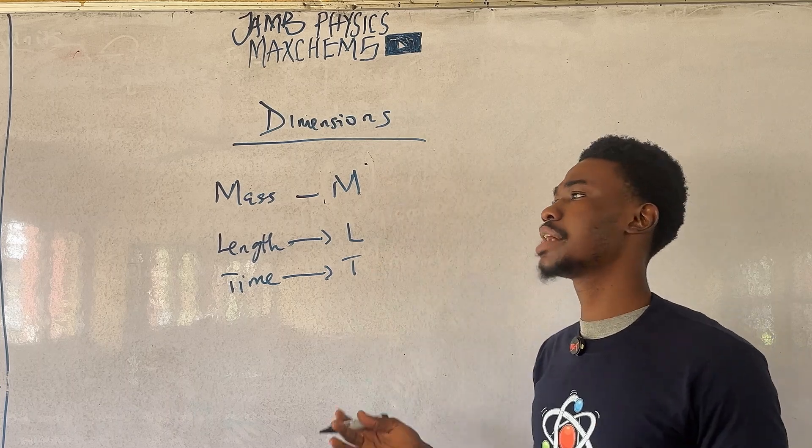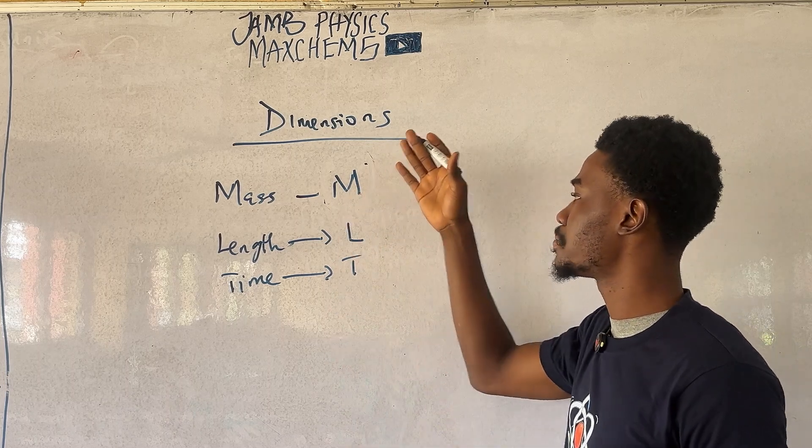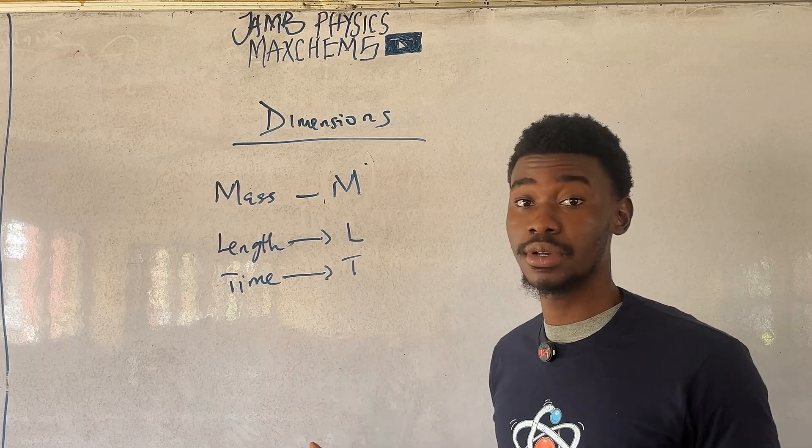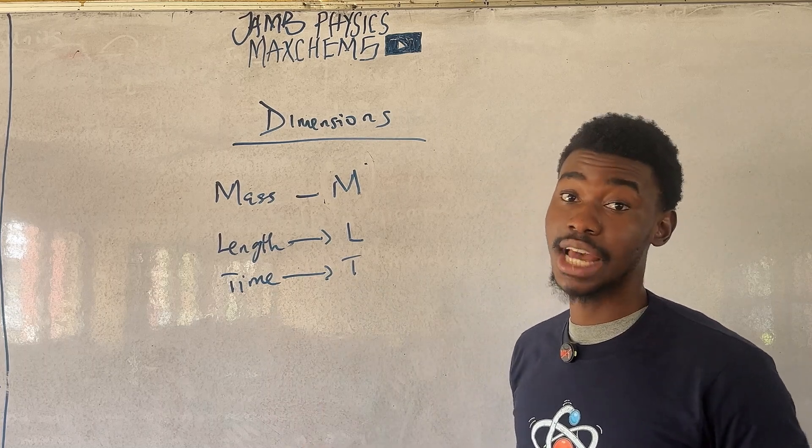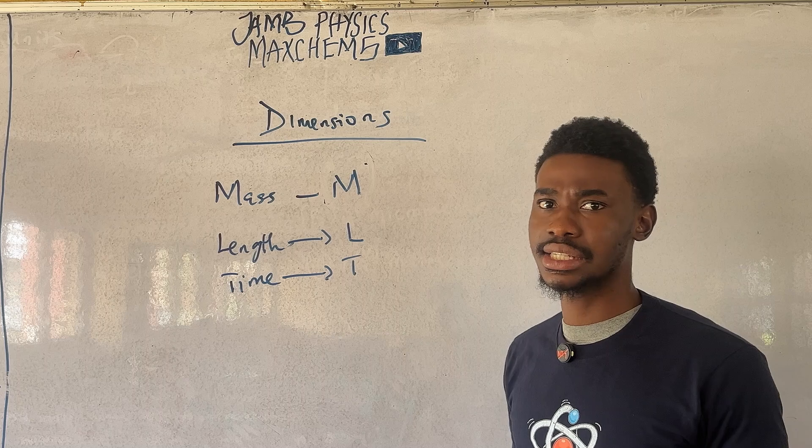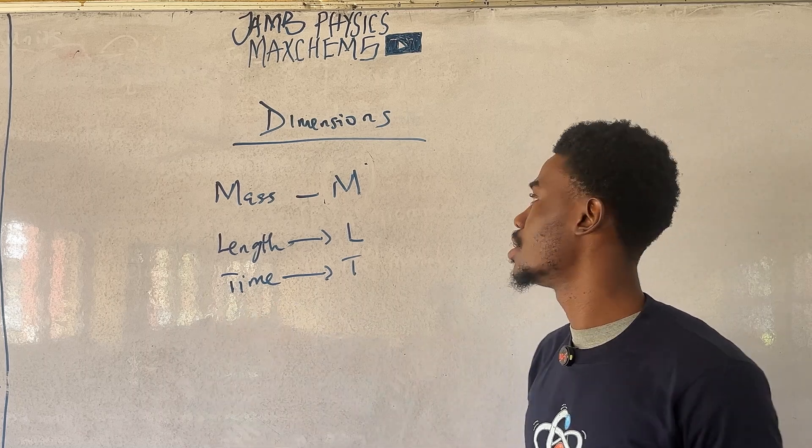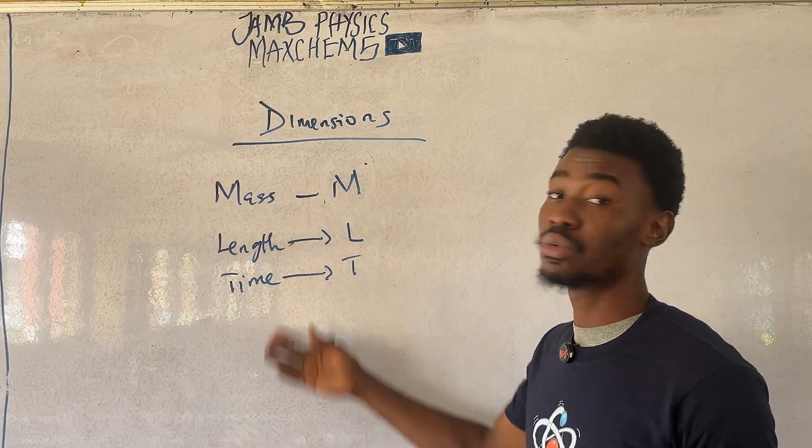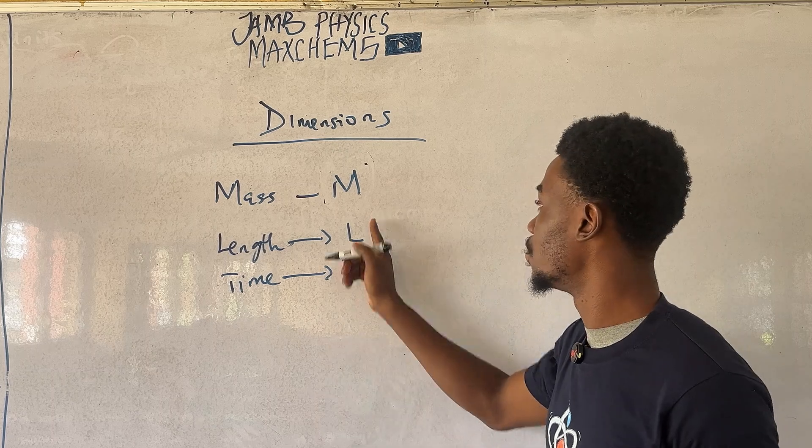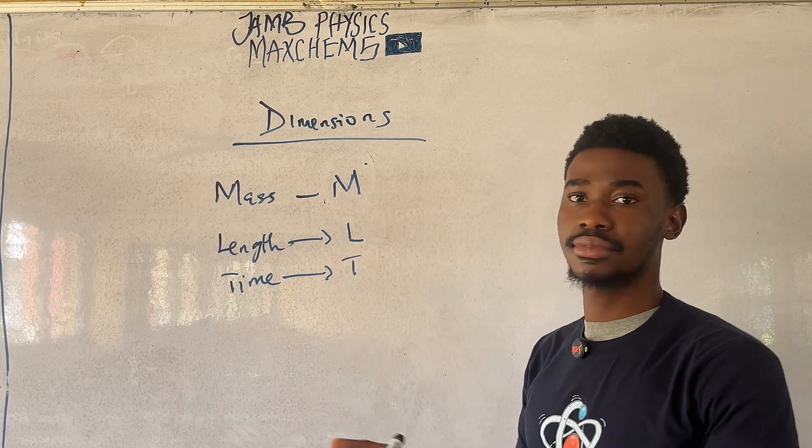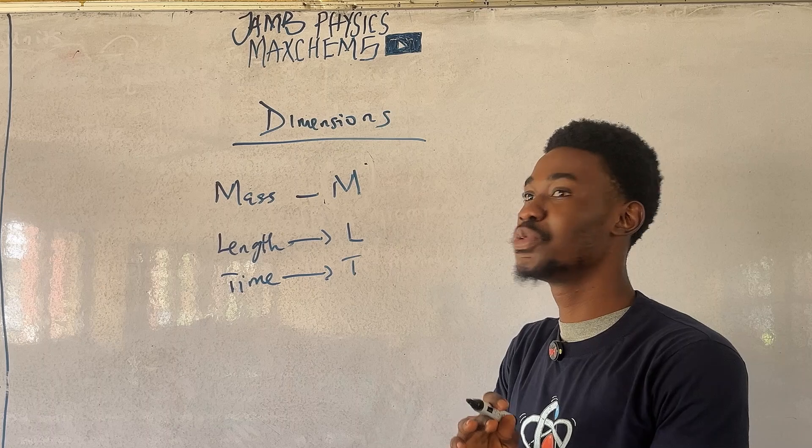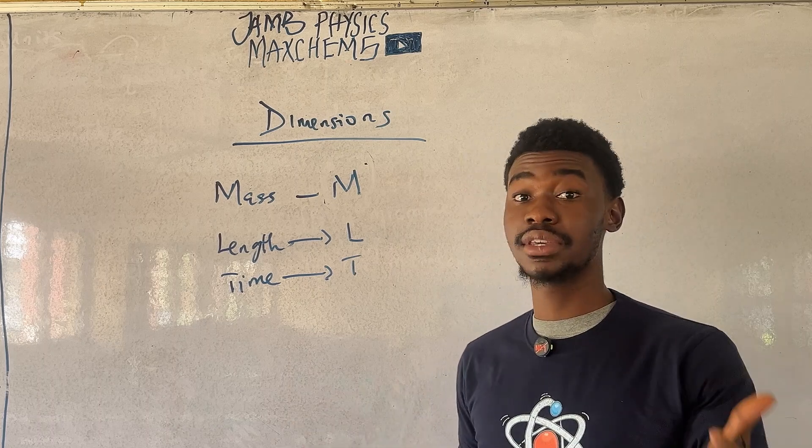Now, other ones can be included, but these are the most prevalent ones that pops up most often in JAMB exams and basically in physics. Sometimes you can see temperature, but most often they're not. These are the ones that pops up most of the time. So, MLT can be used to express numerous derived quantities. Let me give you an example.